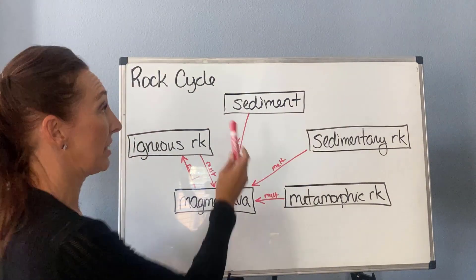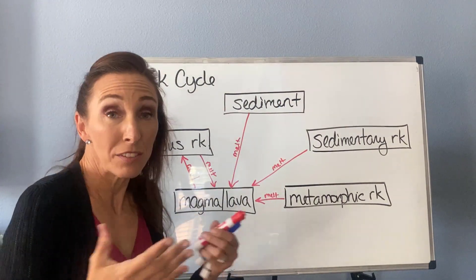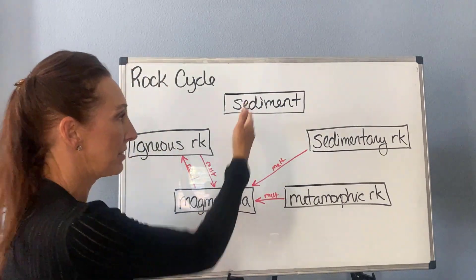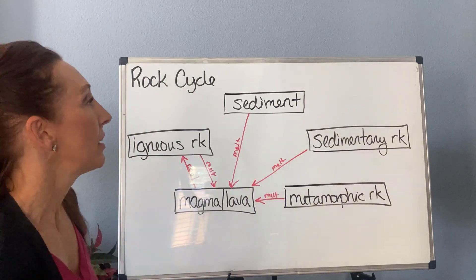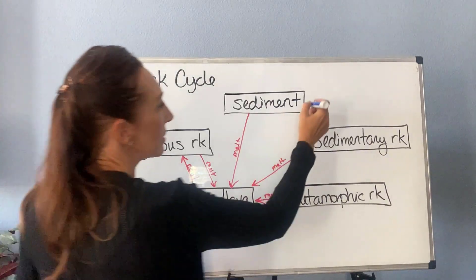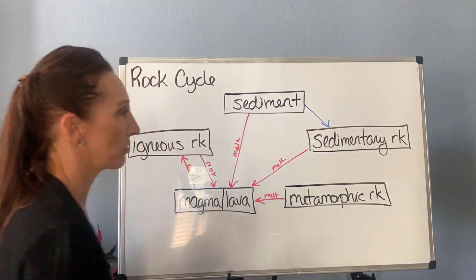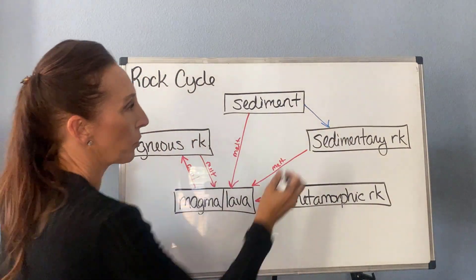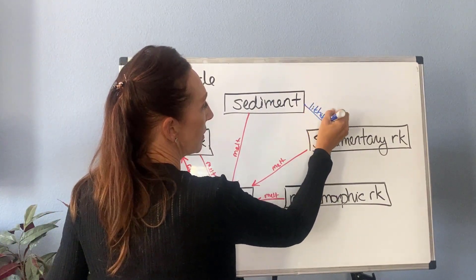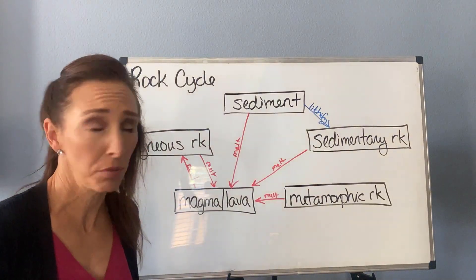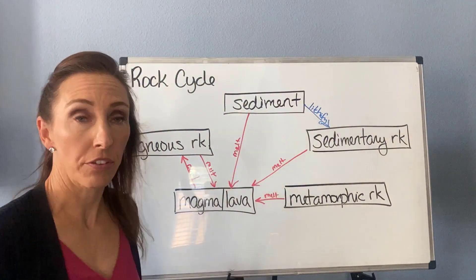Sediment only does one thing besides getting melted — it forms sedimentary rock. So we draw an arrow from sediment to sedimentary rock and write 'lithify' here. There's nothing else we can really do with sediment except melt it or lithify it.